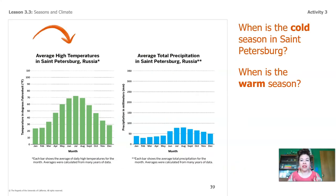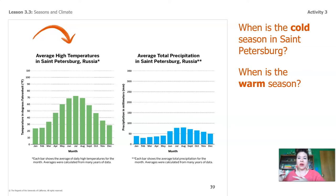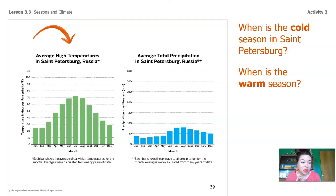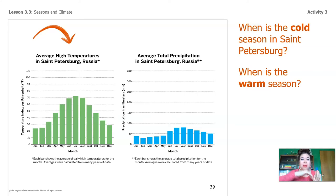So let's think about these two graphs. The green graph is talking about high temperatures and the blue graph is talking about total precipitation — meaning rainfall. We're not talking about Anchorage anymore; look at the title of the graph. Now we're talking about St. Petersburg. So when is the cold season in St. Petersburg? Let's take a look at the green graph. January, February, March, and then skipping over the warm months to October, November, December — those are the cold months, the cold season. When is the warm season? It's warm during May, June, July, August, and September — those are the months when the bar graph goes up.